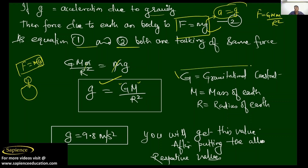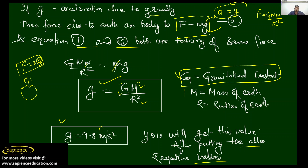Capital G is the gravitational constant, M is the mass of the earth, and r is the radius of the earth. Each and everything here is constant. When you put in the values of G, mass of the earth, and radius of the earth, you get the acceleration due to gravity — and you get the value 9.8. By this method you are able to get the value of gravity.